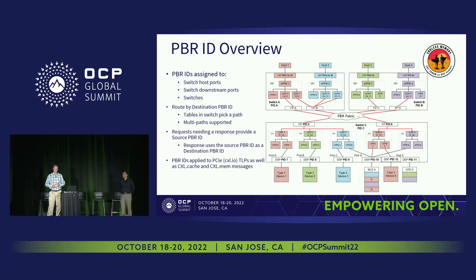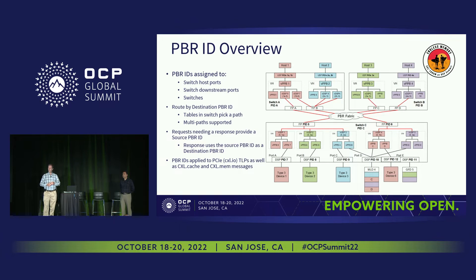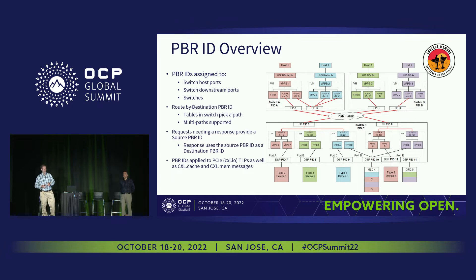The topology remains a PCI Express tree. Looking at Host 1 — it's all pink — that's a tree. That tree connects through the fabric with standard Host 1 enumeration software. One key thing is the IDs on this drawing for PBR ID routing. The switch host port has an ID, the switch downstream ports have IDs, and the switches themselves have IDs for management. With that pool of IDs, you can route from any host to any endpoint, endpoint to endpoint, or host to host.